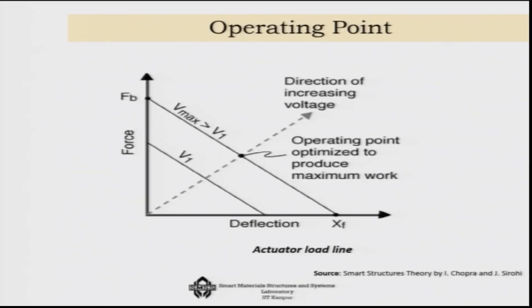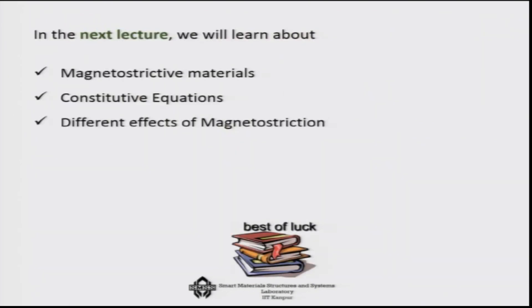An important concept is the operating point. If no force is applied on a piezoelectric material, you only get maximum deflection. If deformation is completely stopped, you only get force. In reality, we are always somewhere in the middle — getting some force and some deflection. From application to application, you have to decide where this operating point will be: how much force and how much deflection you are getting from the system. In the next lecture, we will talk about magnetostrictive materials, their constitutive equations, and different effects of magnetostriction.